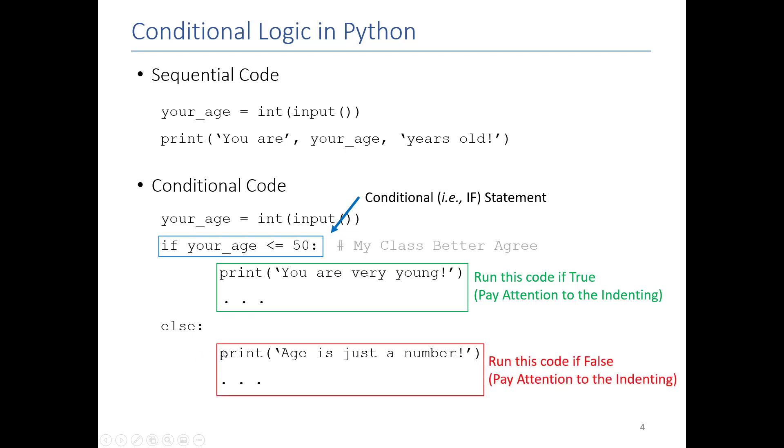The same thing goes here, this is for else. This is the code that will execute if this expression is false. Again you indent it to show that it's part of the else statement.